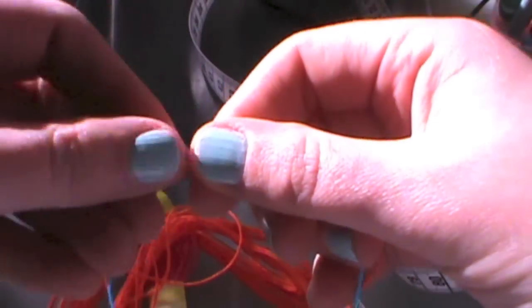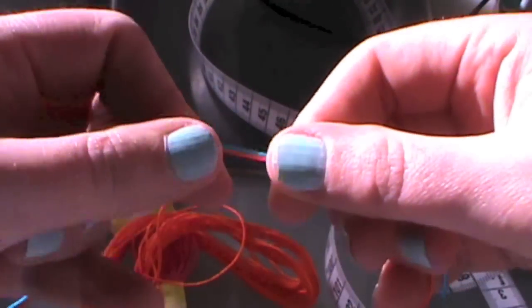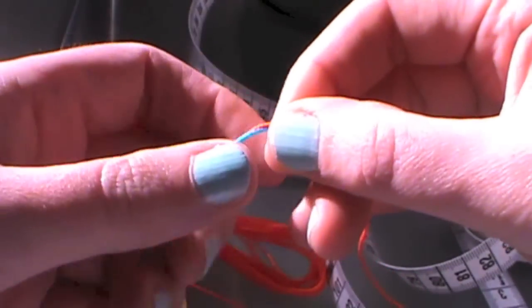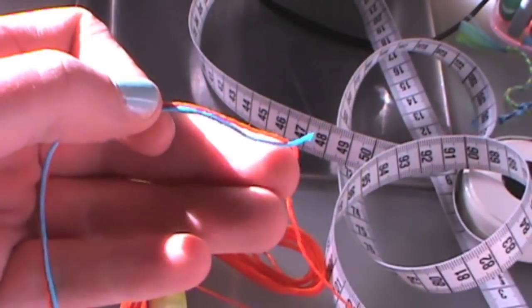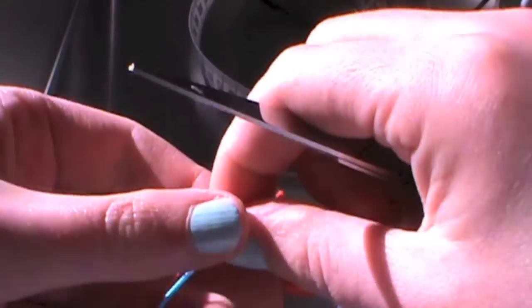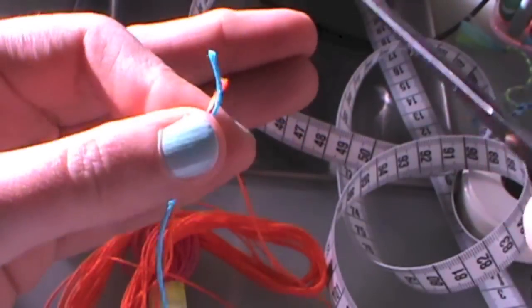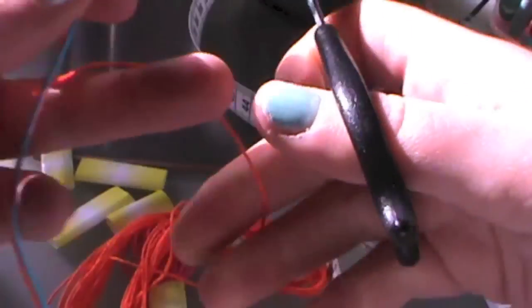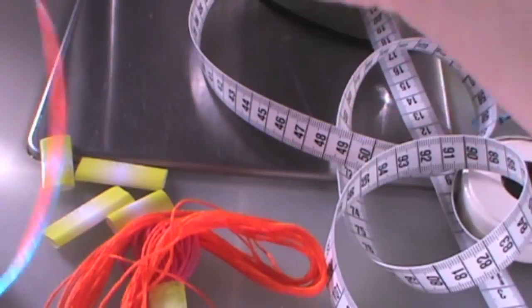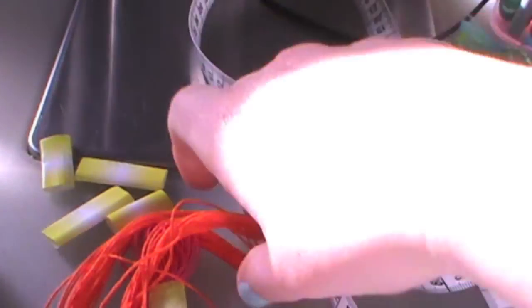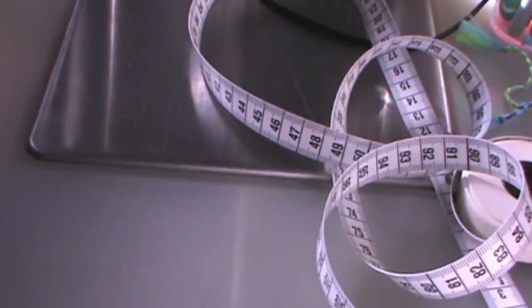So 175 centimeters or 70 inches. When you have your one piece, you can use that to size up your other three pieces of embroidery floss, and that way you make sure they're all the same size.